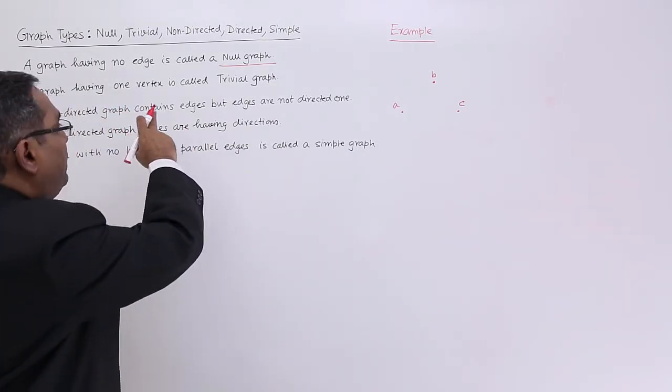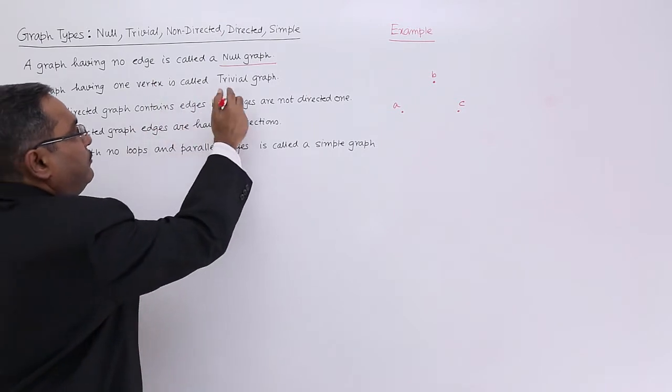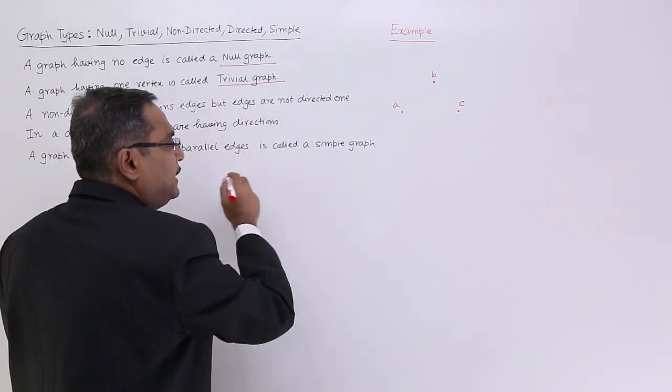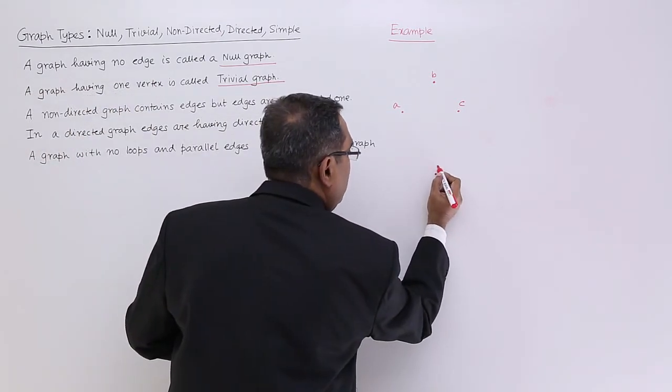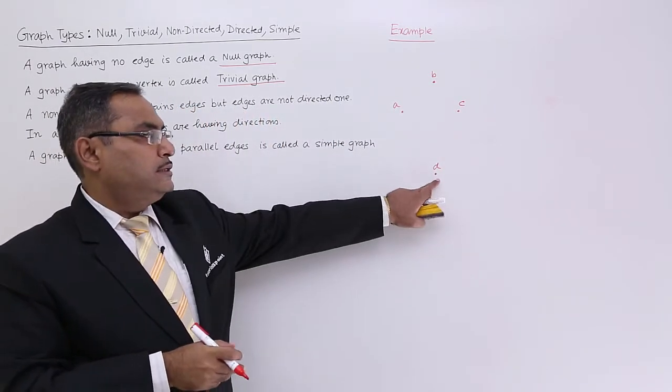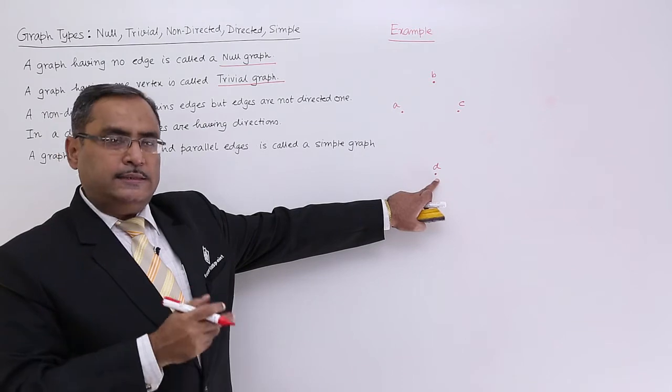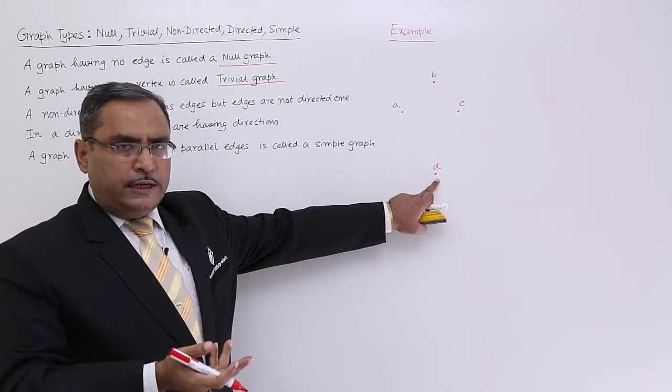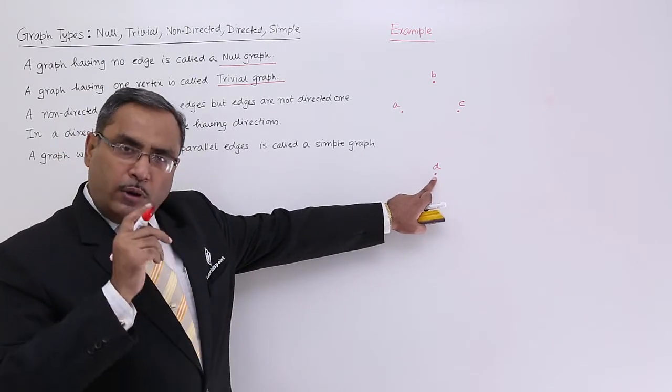A graph having one vertex is called a trivial graph. If there is a graph with only one vertex, this is known as a trivial graph. Obviously, there is no question of having any edge; only one vertex will be there.